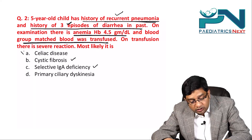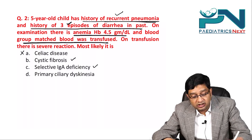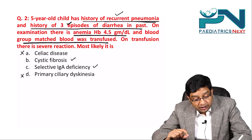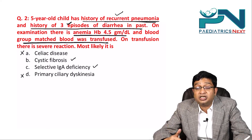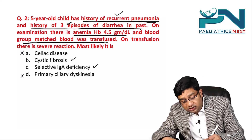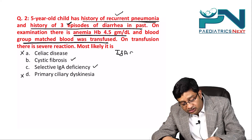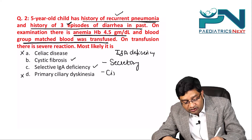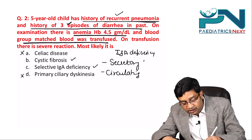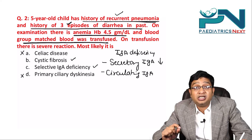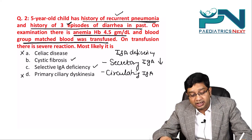IgA deficiency in celiac disease has low chances of recurrent pneumonia, so that is ruled out. Primary ciliary dyskinesia does not present with diarrhea, so that is also ruled out. In IgA deficiency, both secretory and circulating IgA are deficient. Decreased secretory IgA leads to increased incidence of pneumonia and diarrhea.